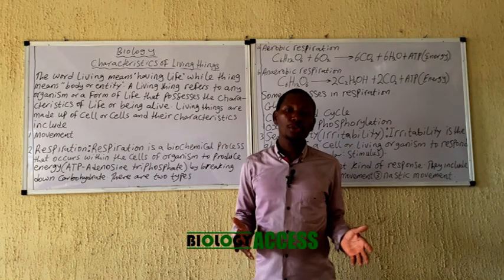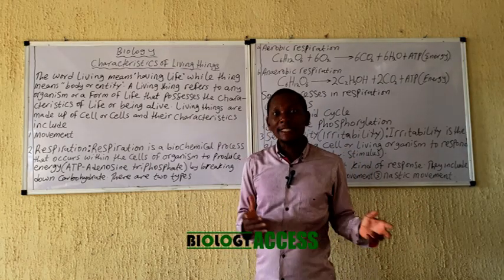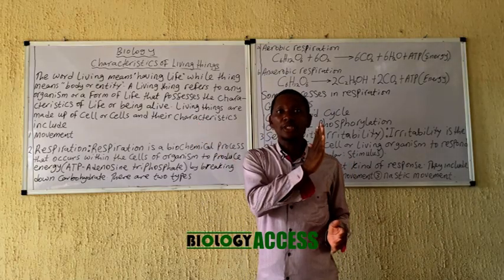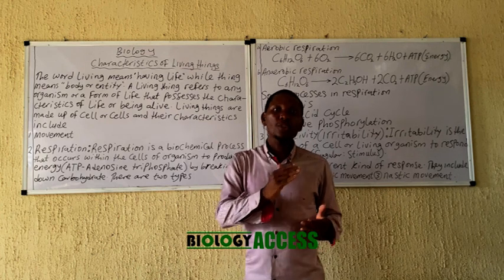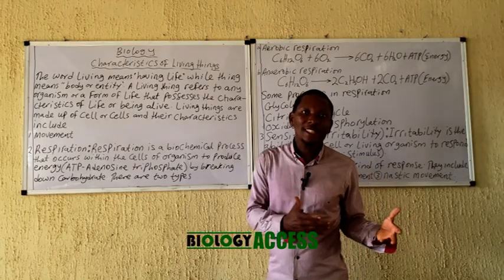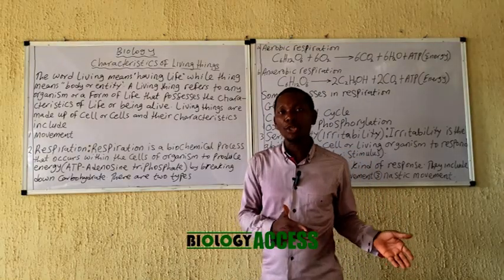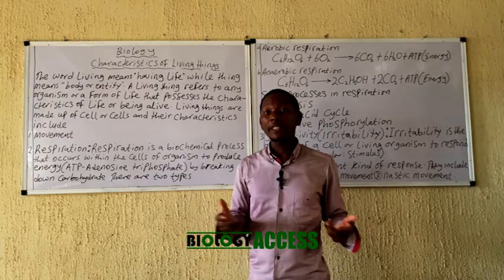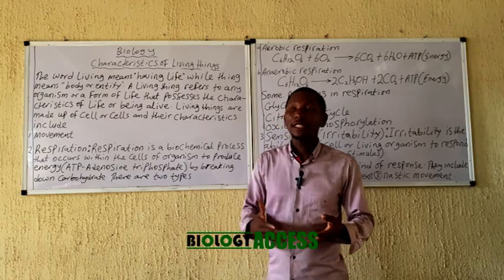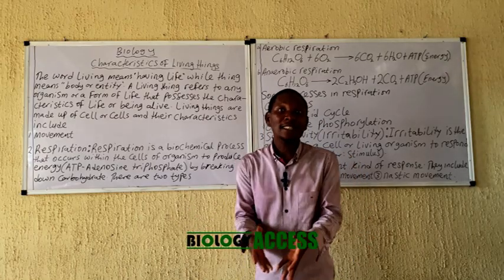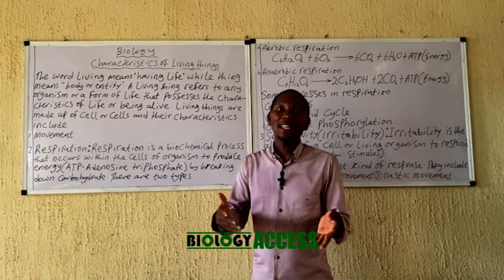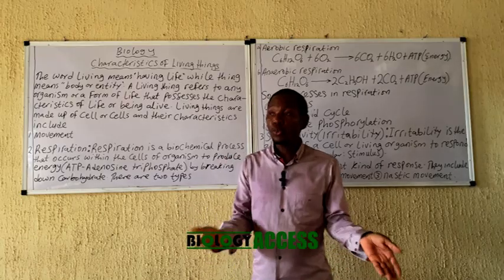Movement is the changing position of an entity, an object, or a living organism. For example, this hand is here and it's shifted to this place — the position has been changed, so this is called movement. Living organisms do move. Certain organisms have limited movements, such as plants that move just part of their body in response to stimuli, or animals which are motile and move very fast. Even certain non-motile animals actually move due to certain stimuli.